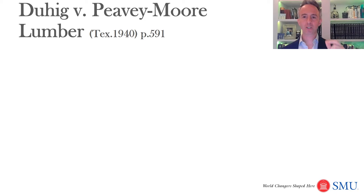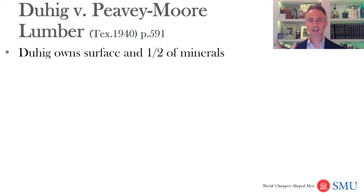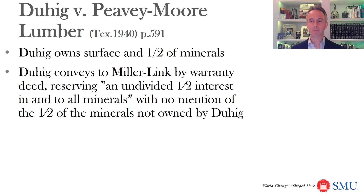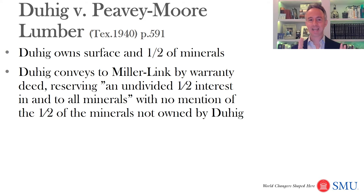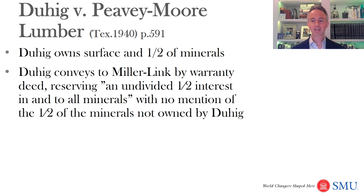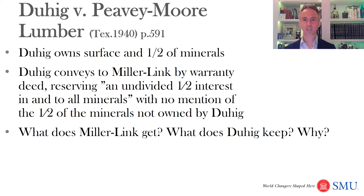The Dewey rule is named after the case Dewey v. Peavey Moore Lumber, from Texas 1940, on page 591 of your textbook. What happened is that Dewey owns the surface and just one half of the minerals. Then Dewey sells this land — conveys it to Miller Link by a warranty deed. A warranty deed says 'I really own what I say I own,' but that warranty deed does not except the one half of minerals that Dewey doesn't own. Instead, it just says that Dewey reserves an undivided one half interest in and to all minerals, with no mention of the one half of minerals not owned by Dewey.